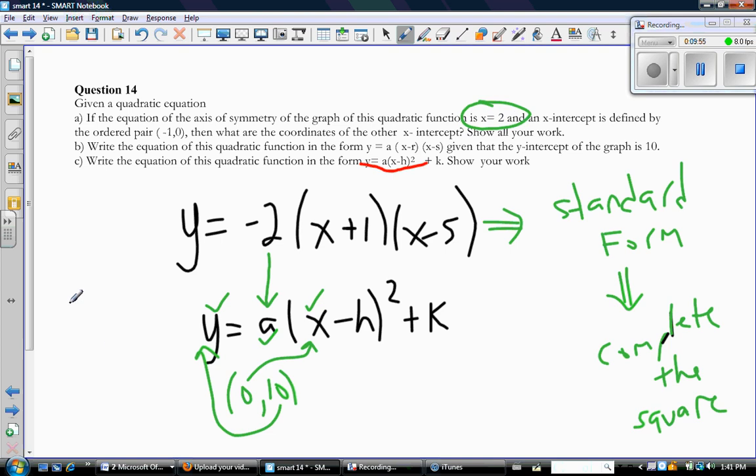And that means that the vertex is at (2, something) because the vertex is always right on the axis of symmetry. So this value here is the h value of the vertex. Oh, so we know that. In fact, the only thing we don't know is k. So we can just do a substitution of all of these values, and then we can solve for k.